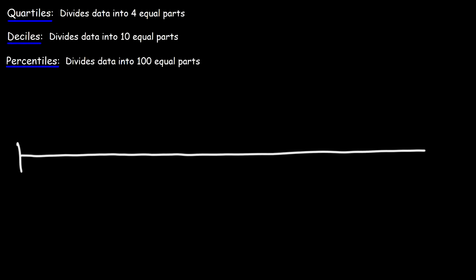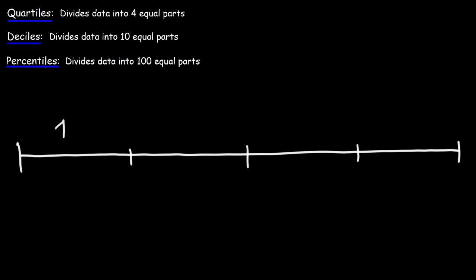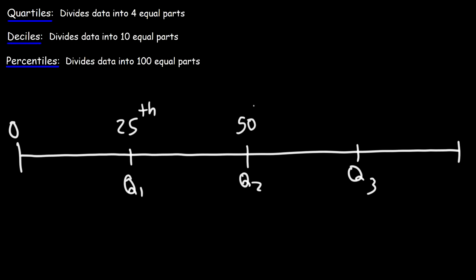Let's draw a number line going from 0 to 100 and divide it into four equal parts. This is the first part, second, third, and fourth part. This is Q1, this is Q2, and here we have Q3, or the third quartile. On the left is the 0th percentile. The first quartile is the 25th percentile, the second quartile is the 50th percentile, and the third quartile is the 75th percentile, going up to 100.